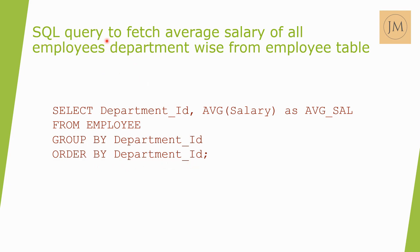We need to fetch average salary for all employees department-wise, so we identify the department_id and its average salary. The AVG function returns a single value, and with GROUP BY department_id, the average salary is fetched for each department. For example, department_id 10 has average salary 3500, department_id 20 has 4500.